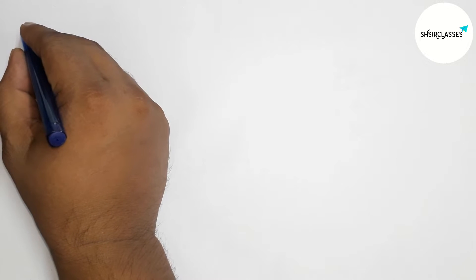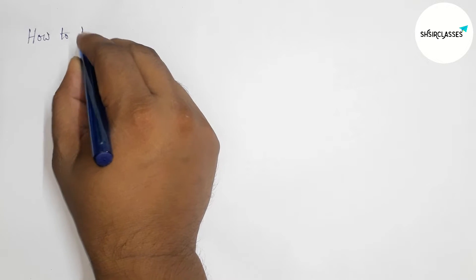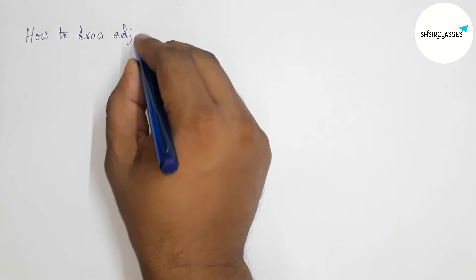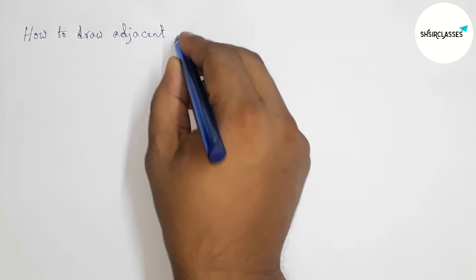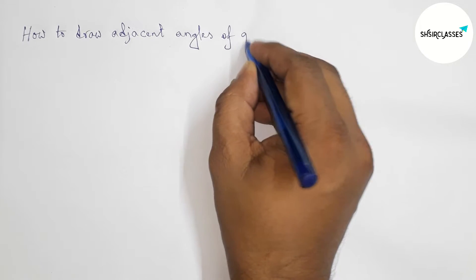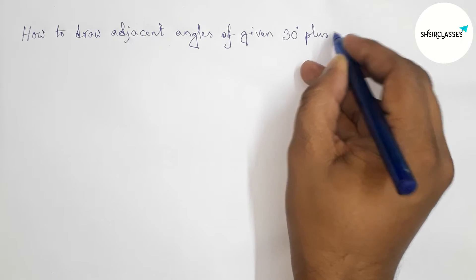Hi everyone, welcome to S S Classes. Today in this video, how to draw adjacent angles of given 30 degrees plus 45 degrees angle by using protractor in easy way. So please watch the video till the end. So let's start the video.